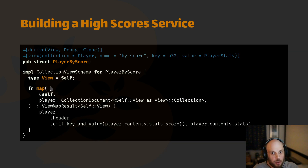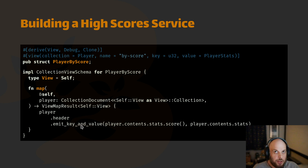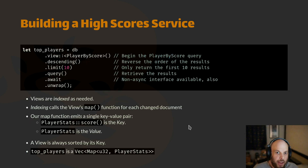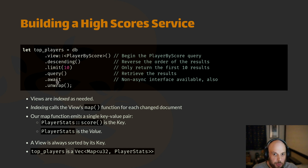To query this in BonsaiDB, we're going to create a view called PlayerByScore. It has a key and a value — every view has a key and a value, although you can use the unit type if you don't actually want to use one of those values. Each view is implemented with a map function and optionally a reduce function — we're not going to show off the reduce functions in a lightning talk. The map function is all about extracting data out of your original collection documents. This particular map function emits a single key and value: the key is the player's score and the value is the stats. This is an example of how you would query the top 10 players using this view. Views are always sorted by their key, so to get the highest values you make a descending, limit-10 query. That's kind of what you'd expect out of a lot of databases, but we didn't actually write any SQL — and there's not actually an ORM creating SQL behind the scenes. It's all just pure Rust.